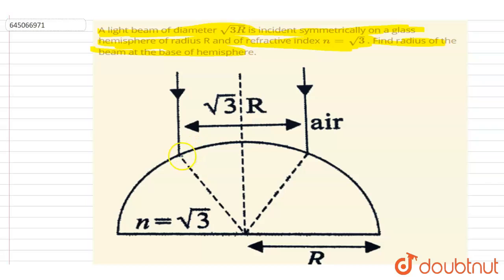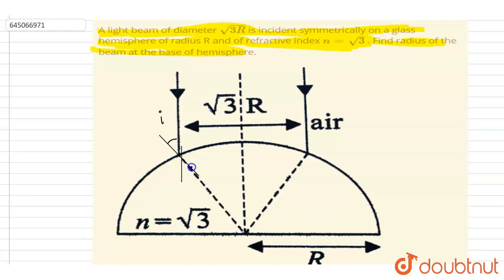So here the light ray is coming in, and this is the normal at the surface where it is striking. If we call this the angle of incidence i, then by geometry, extending the incident line, the alternate angle is also i.